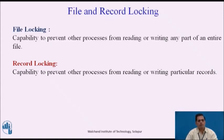Next, we look at file and record locking. File locking is the capability to prevent other processes from reading or writing any part of an entire file; the kernel locks the file so that the user can read at most one file at a time. Record locking is the capability to prevent other processes from reading or writing a particular record in the file. When a user writes a particular record, no other processes can interfere, and record locking is enforced by the kernel.